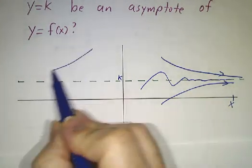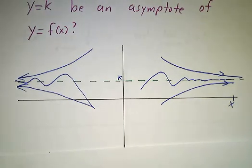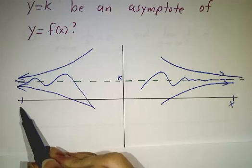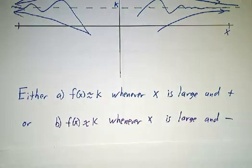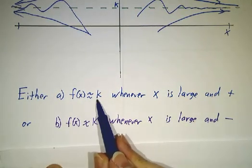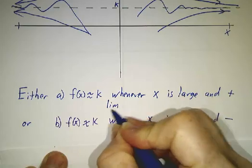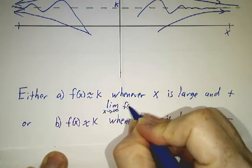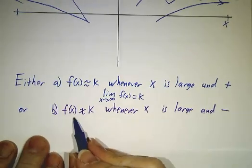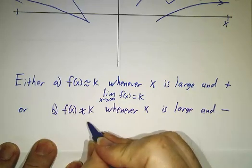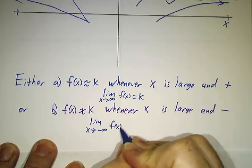We could also have the curve approaching on the other end — whenever x is very negative, f is very close to k. So the two situations where you have a horizontal asymptote are: either the function gets close to k whenever x is large and positive, written as the limit as x goes to infinity of f equals k, or the function is very close to k whenever x is large and negative, written as the limit as x goes to minus infinity of f equals k.